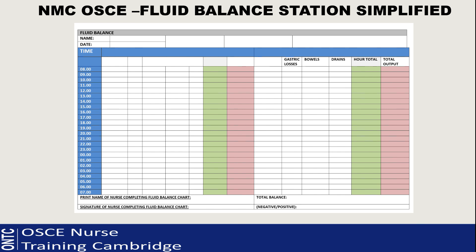The first important thing to remember is every box belongs to 59 minutes. So the 8 o'clock box is from 8:00 to 8:59, the 9 o'clock box is 9:00 to 9:59. So if your patient had something at 8:35 - say a glass of water - that would still go in the 8 o'clock box. You don't need to change the time to 8:35, just put it into the 8 o'clock box.